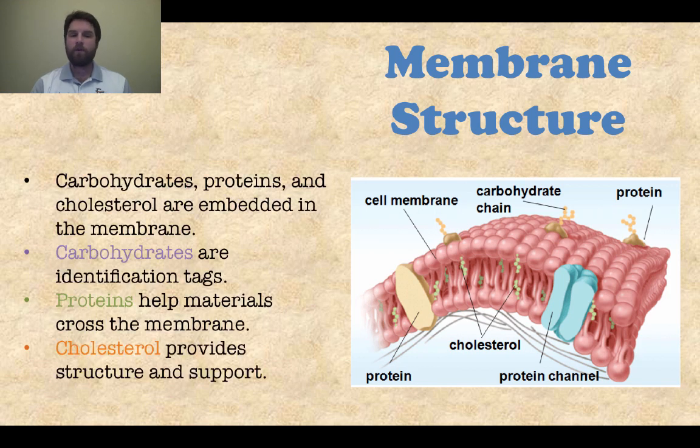So carbohydrates, proteins, and cholesterol are all embedded in that membrane, just like we said before. Carbohydrates are usually what we would call ID tags, or identification tags. They identify portions of the membrane that may be important for other molecules that are coming by, trying to get through the membrane.